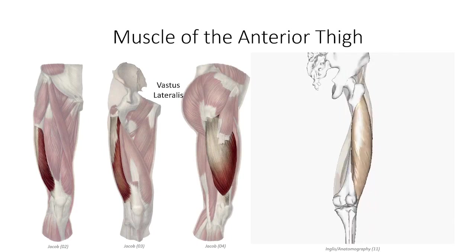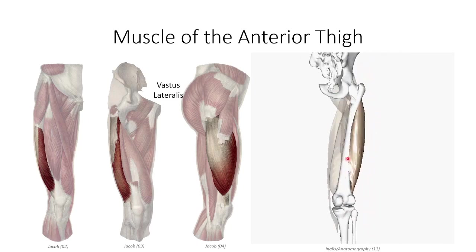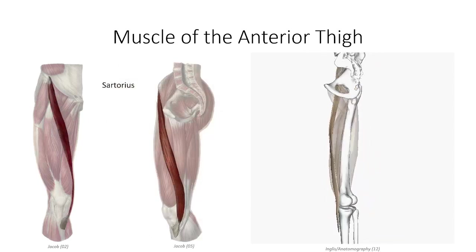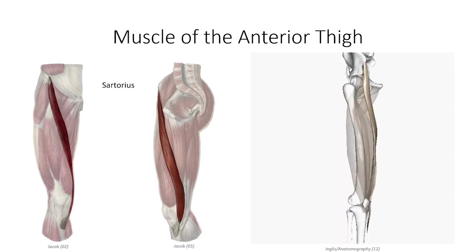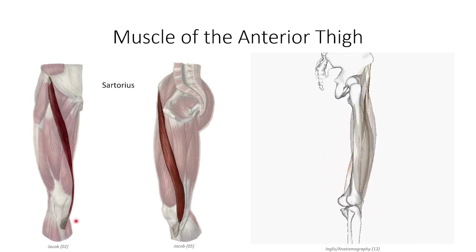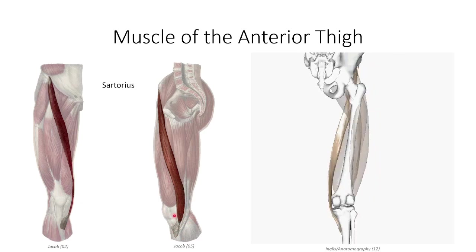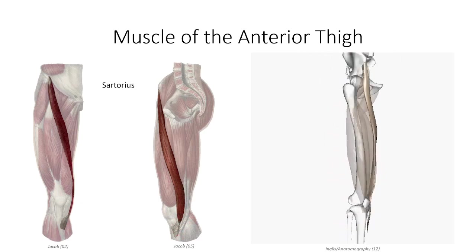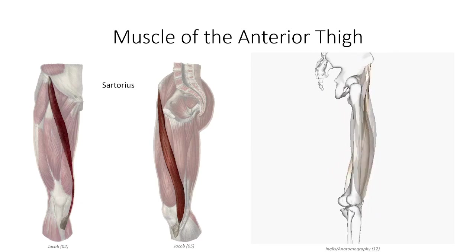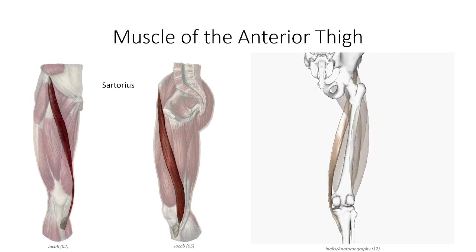The vastus lateralis can be seen lateral to the rectus femoris, with a long origin off the lateral lip of the linea aspera. The last muscle of the anterior compartment is the sartorius, which has the distinction of being the longest continuous muscle in the body. Its fibers originate off the ASIS and spiral medially and inferiorly to cross posterior to the knee, then change direction to come anteriorly and insert on the medial aspect of the knee. Sartorius is a Latin term meaning tailor, as medieval tailors worked in a cross-legged position, and the sartorius plays a role in flexion at both the hip and knee and external rotation at the hip.